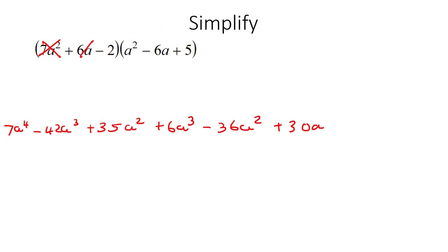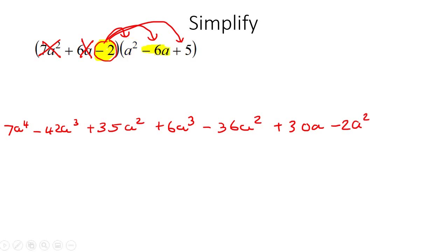Now we do the same thing with negative 2 — multiply it by each of the three terms. Negative 2 times a squared gives negative 2a squared. Negative 2 times negative 6a becomes positive 12a. And then negative 2 times 5 is negative 10.